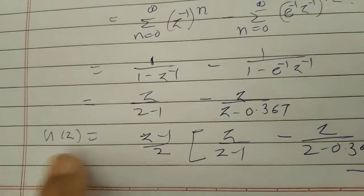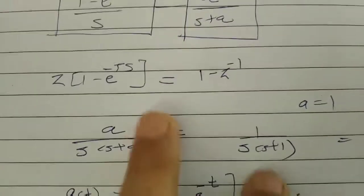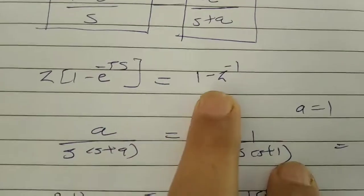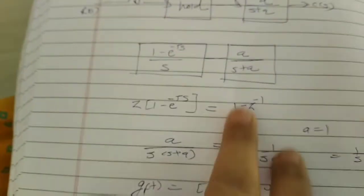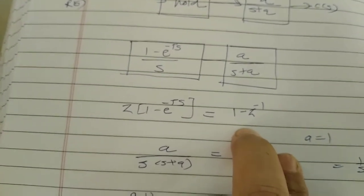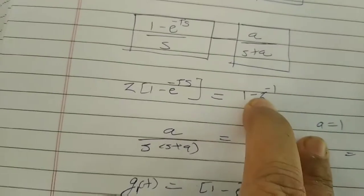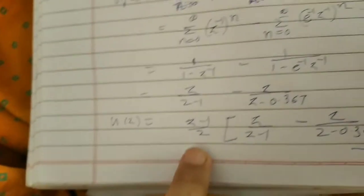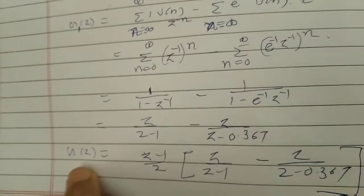That equals z divided by (z minus 1) minus (e raised to minus 1 times z) divided by (z minus 0.367), where e raised to minus 1 is 0.367. The total transfer function then combines with the (1 minus z raised to minus 1) part, which equals (z minus 1) divided by z, giving the final pulse transfer function.